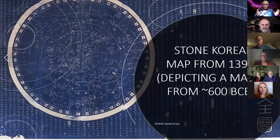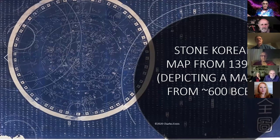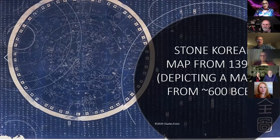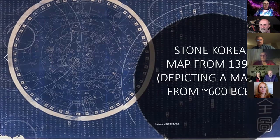Here is a map carved into stone in Korea, depicting a sky from 600 BCE. This map no longer matches the patterns of stars in the sky because they move. So if you're hoping to go out and see exactly the same thing your very ancient ancestors saw, it's not going to happen. In fact, if you go back 30,000 years, Polaris wasn't the North Star — it was Vega, because the Earth, like a top, wobbles. And it'll come back to Vega eventually.